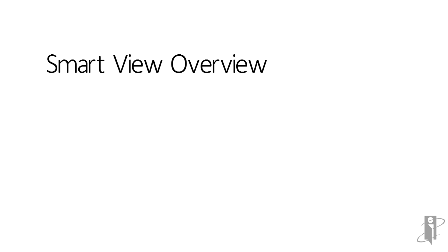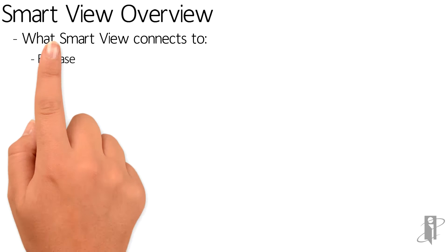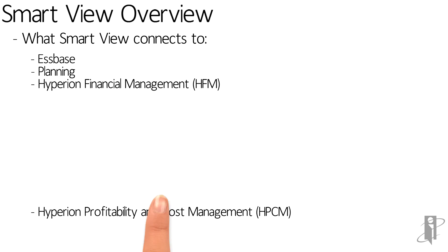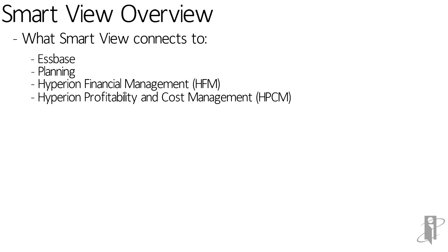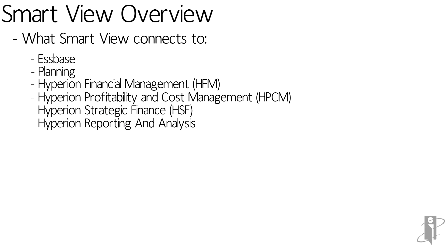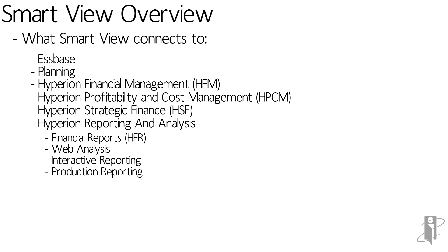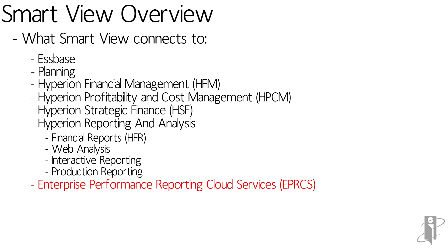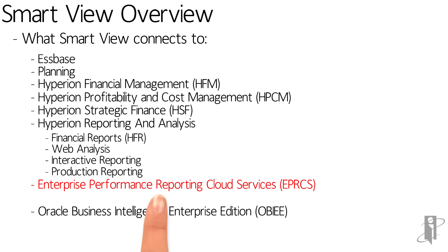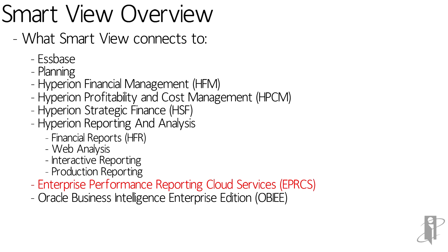First, let's talk about what Smart View is. Smart View allows you to connect to multiple products within and outside of the EPM stack — for example, Essbase, Planning, Hyperion Financial Management, Hyperion Profitability and Cost Management, Strategic Finance, the different reporting and analysis tools, financial reports, web analysis, interactive reporting, and production reporting. In this version, what's new is you can also connect to Enterprise Performance Reporting Cloud Services (EPRCS), Oracle Business Intelligence Enterprise Edition (OBIEE), and other financial modules like Fusion Financials.